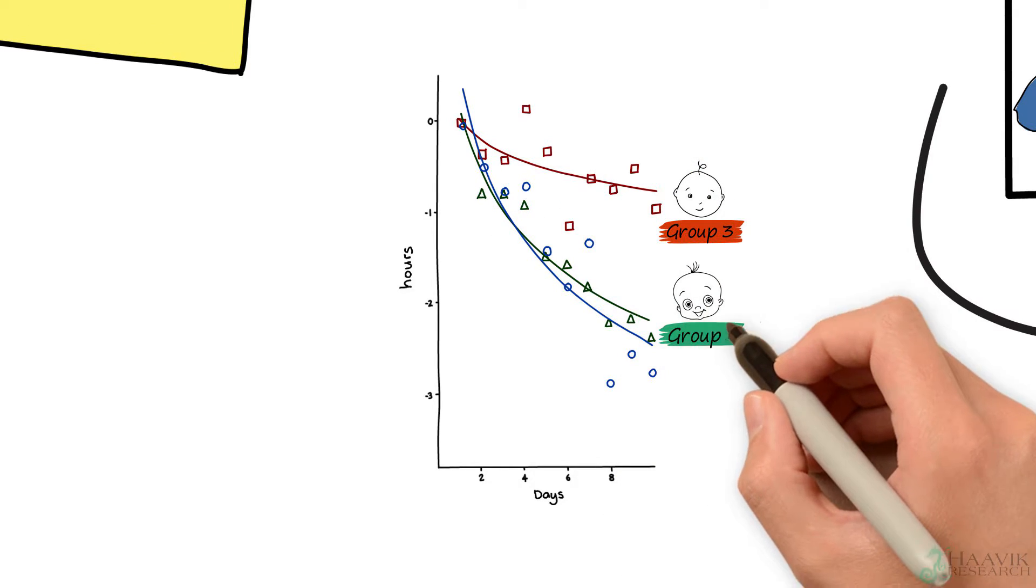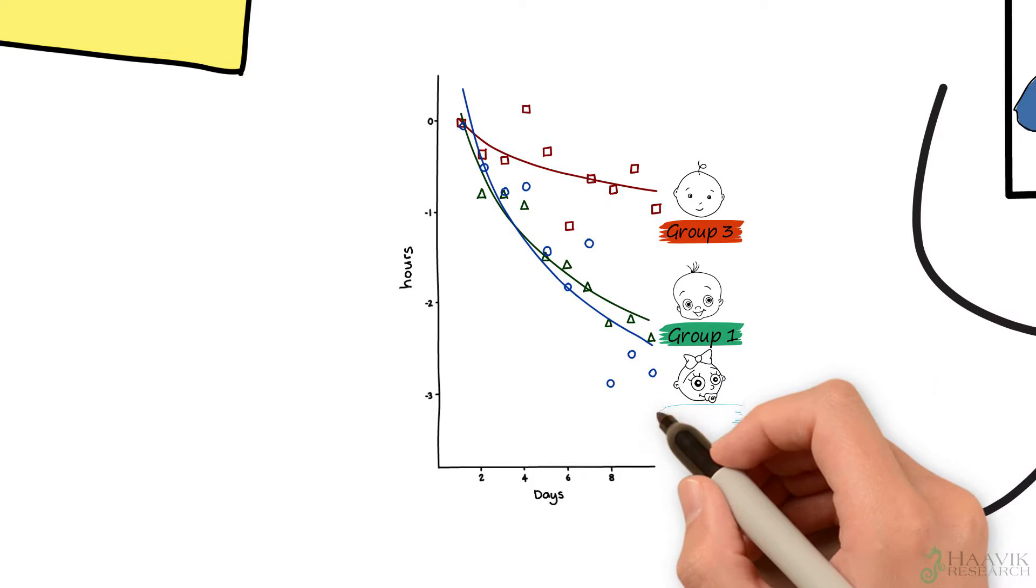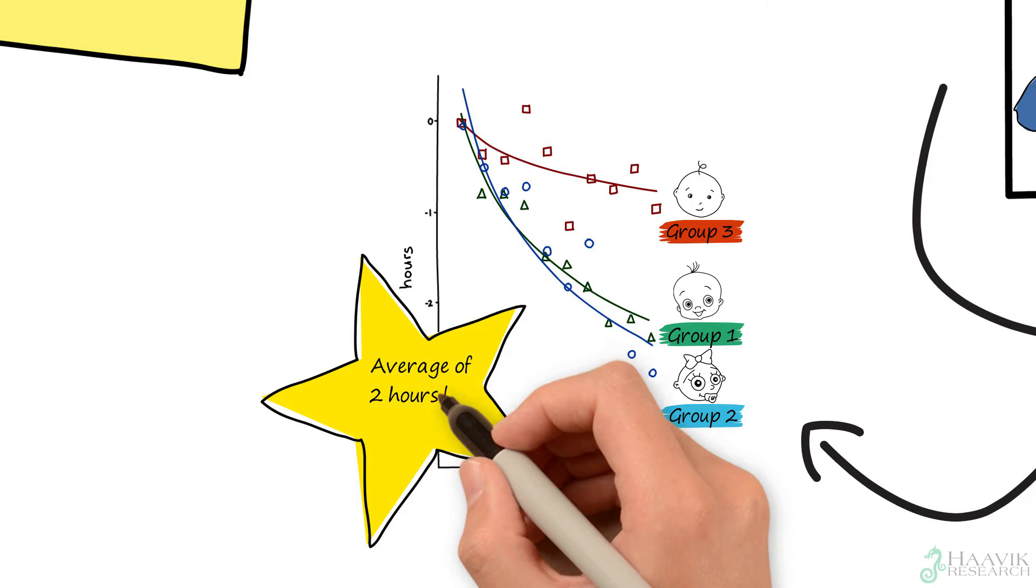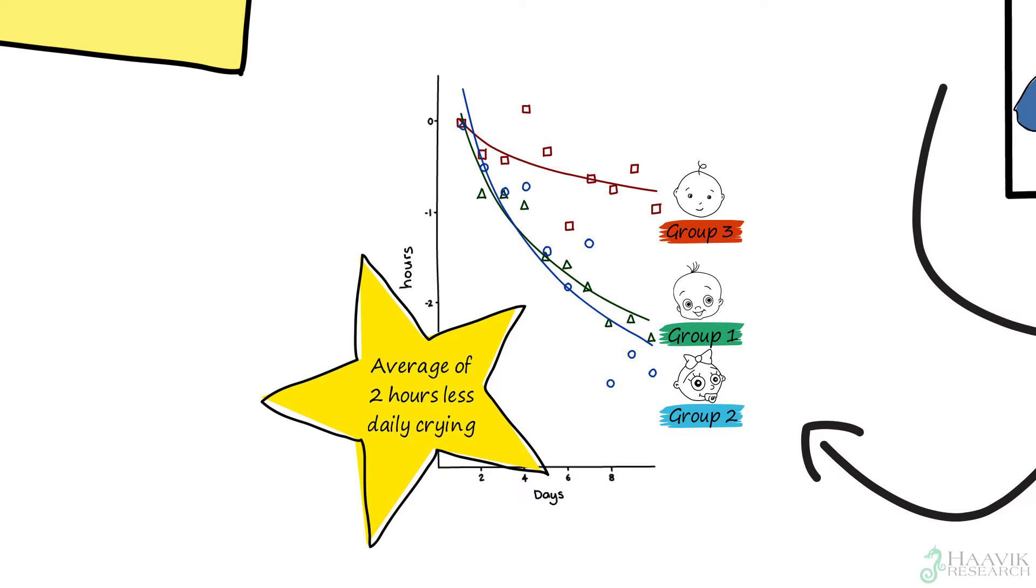Research has found that both groups of babies who received chiropractic care responded equally well. We can see here that the babies who did get chiropractic care are crying on average 2 hours less each day after 10 days of care. This is a significant reduction in crying.